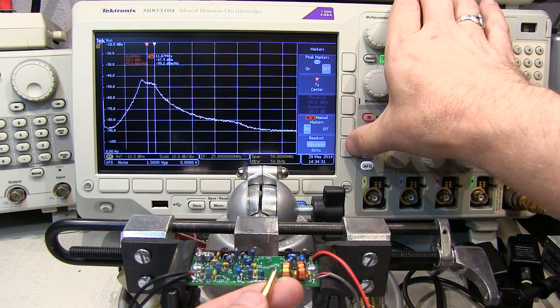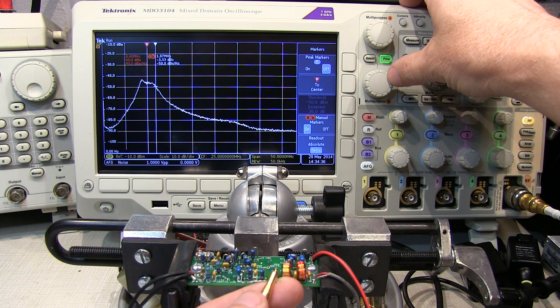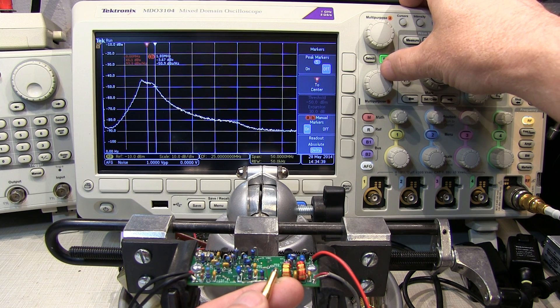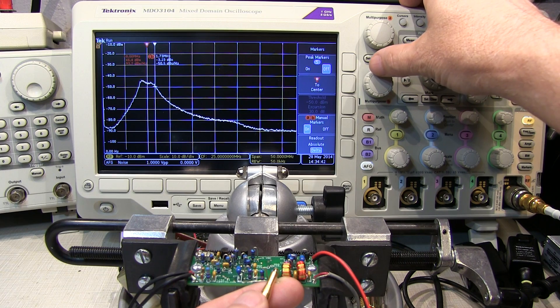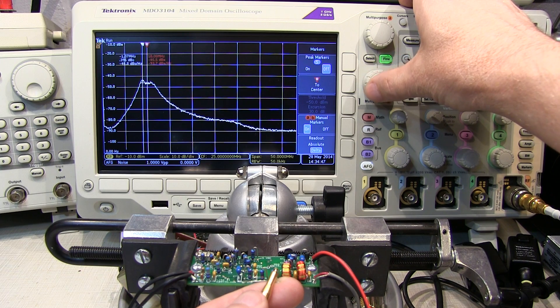Let me put that into delta mode here. And if we look here, we're about 3 dB down, about 1.8 MHz above, so at 11.8 MHz or so, 11.7 MHz, we're 3 dB down on that side. And we go down to the other side here.